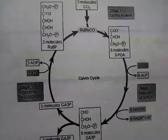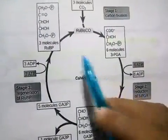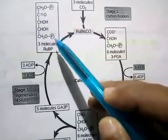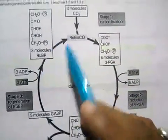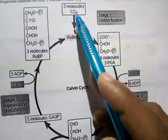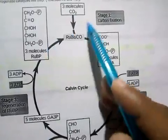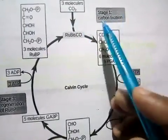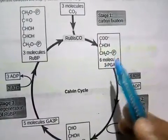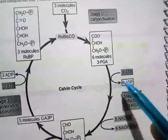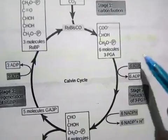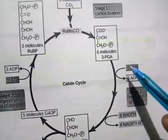In the Calvin Cycle diagram, RUBP (ribulose 1,5-bisphosphate) is present in 3 molecules, which accept 3 molecules of CO2 during carboxylation.